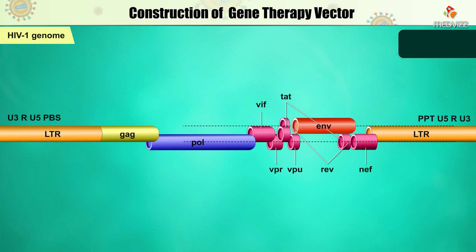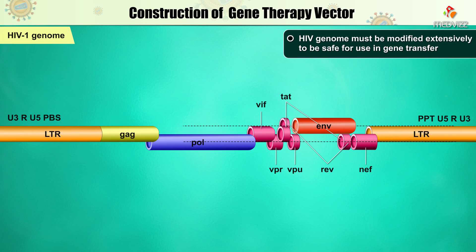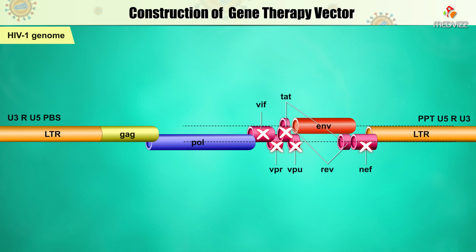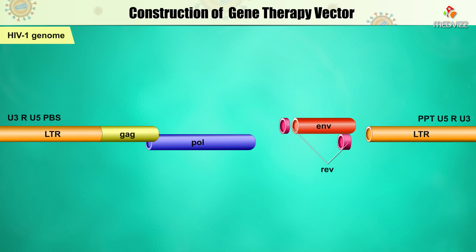Because HIV is a known human pathogen, its genome must be modified extensively to be safe for use in gene transfer. To construct a safe and effective vector, the accessory genes VPR, VPU, nef, vif, and tat, which encode HIV virulence factors for disease, have been removed entirely.